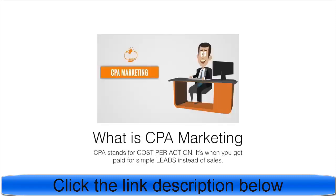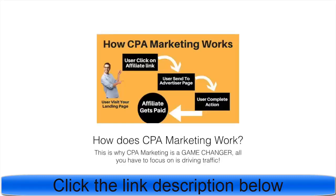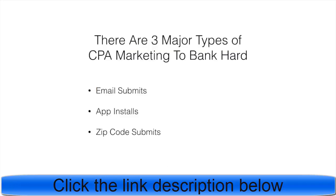How to start CPA marketing step by step. What is CPA marketing? It's cost per action. How does CPA marketing work? You use your clicks to fill a link, then they complete the form and you get paid — or they buy something through your link. That's how it works.